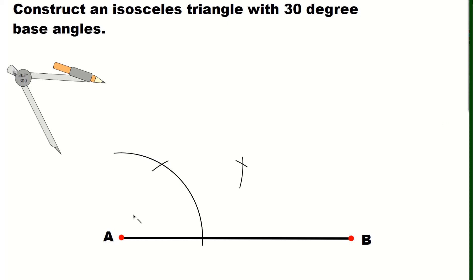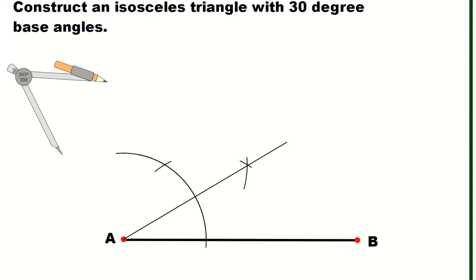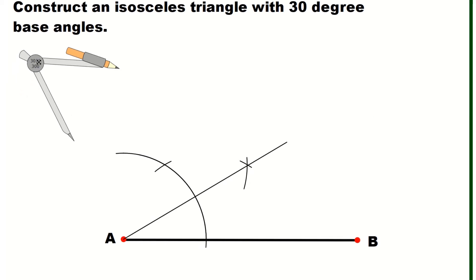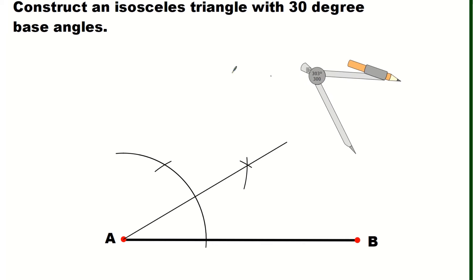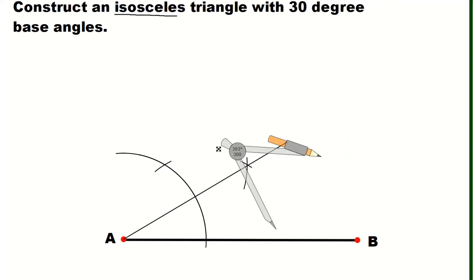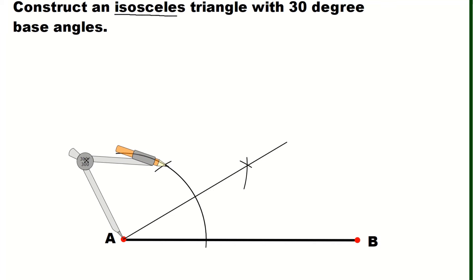Now let's draw that segment. It's a thinner segment because that is not the final side of our triangle. Now, since we are trying to construct an isosceles triangle, we will construct another 30-degree angle on this side, with B as a vertex of the angle.